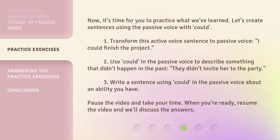Now, it's time for you to practice what we've learned. Let's create sentences using the passive voice with 'could.' 1. Transform this active voice sentence to passive voice. 2. Use 'could' in the passive voice to describe something that didn't happen in the past: 'They didn't invite her to the party.' 3. Write a sentence using 'could' in the passive voice about an ability you have.